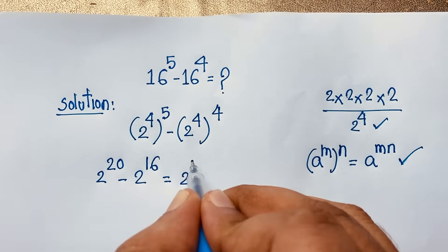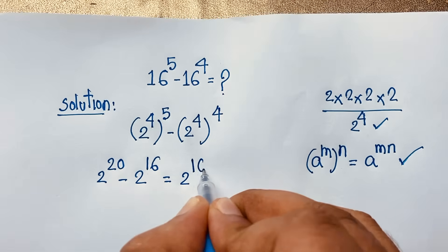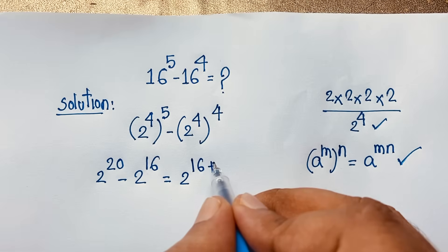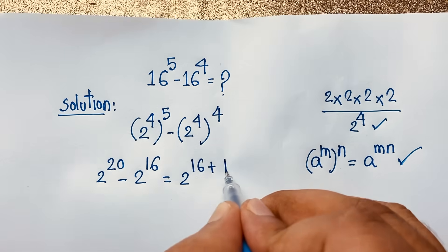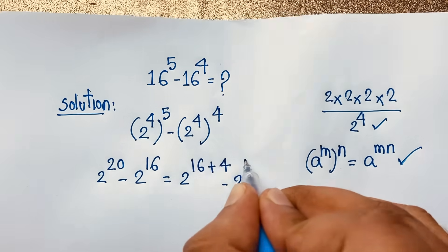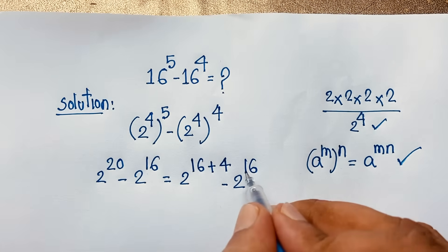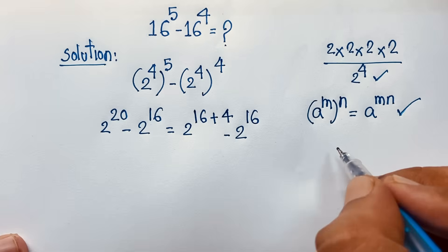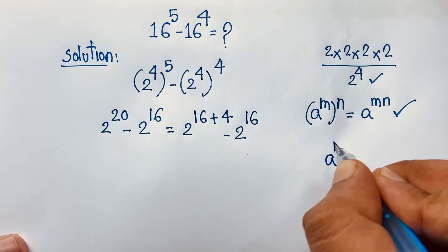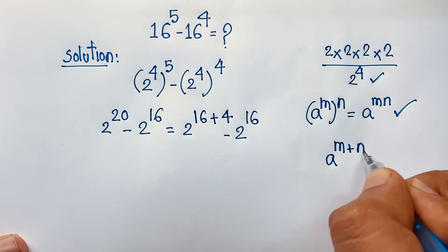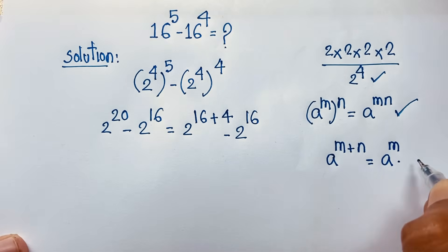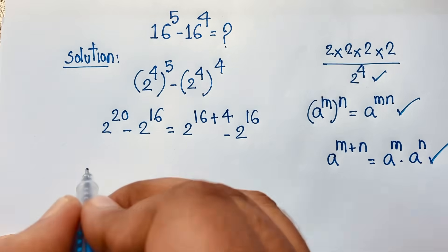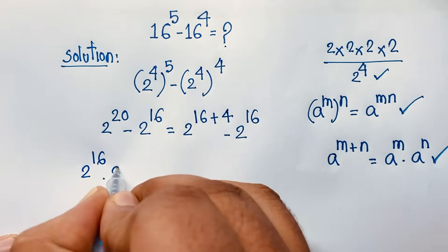Now, 2 to the power 20 can be written as 2 to the power 16 plus 4. I take out 2 to the power 16 because it appears in both terms. The exponential formula states that a to the power m plus n equals a to the power m times a to the power n. So 2^20 = 2^16 times 2^4.